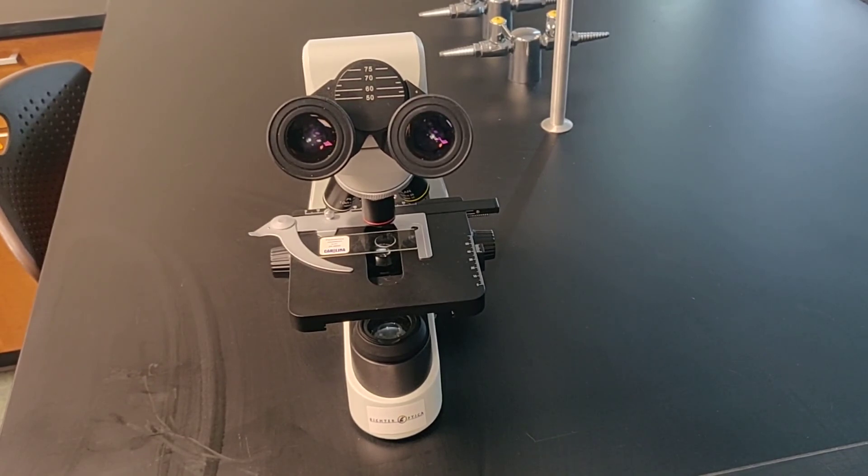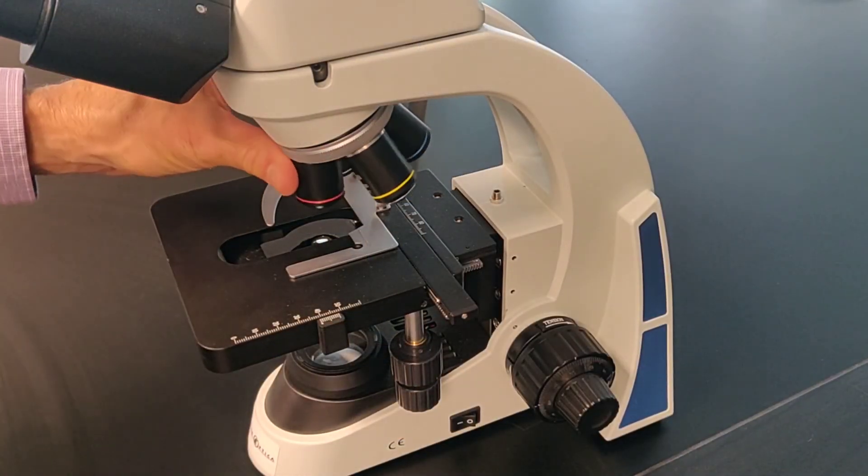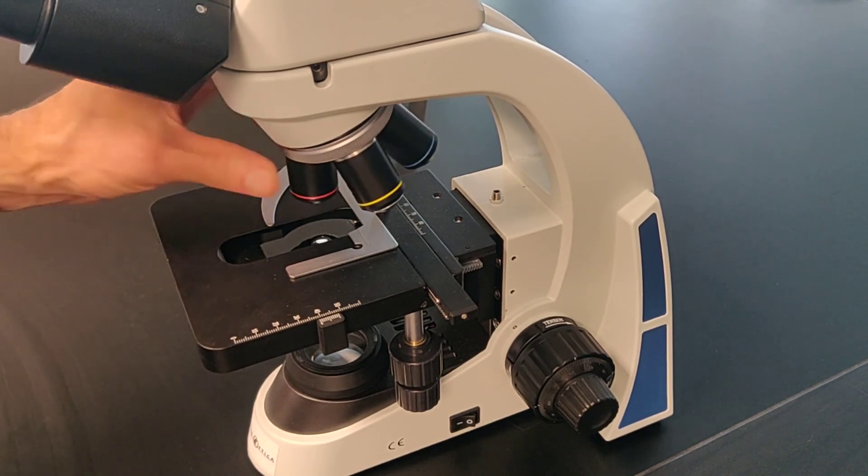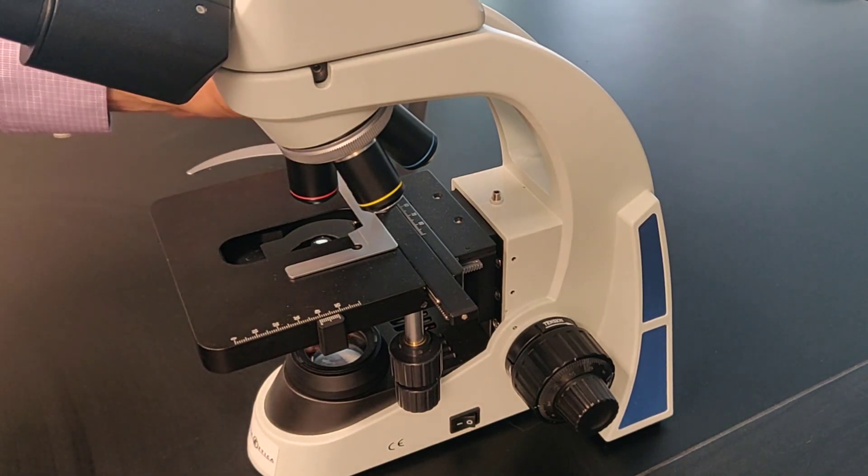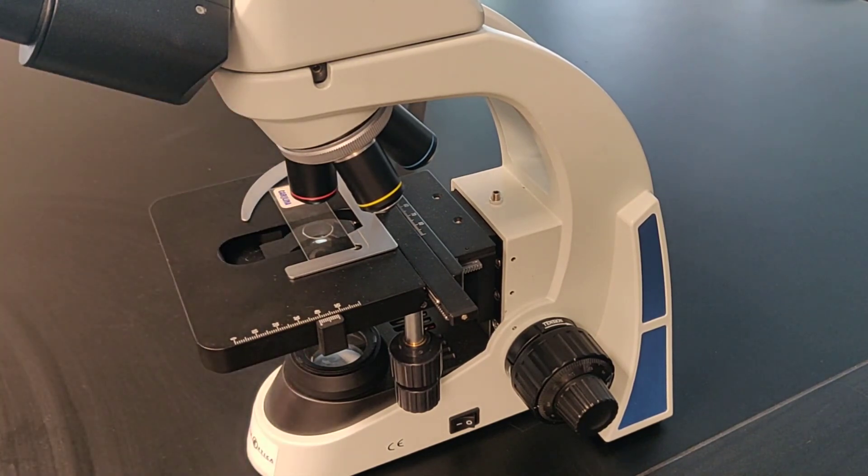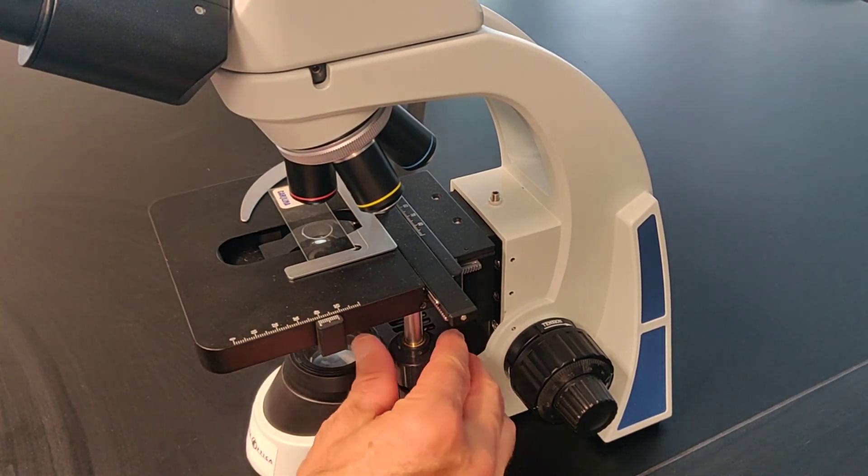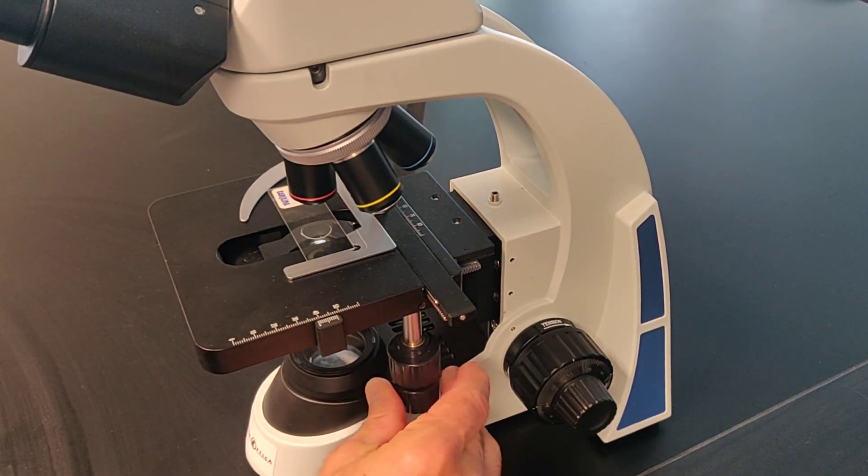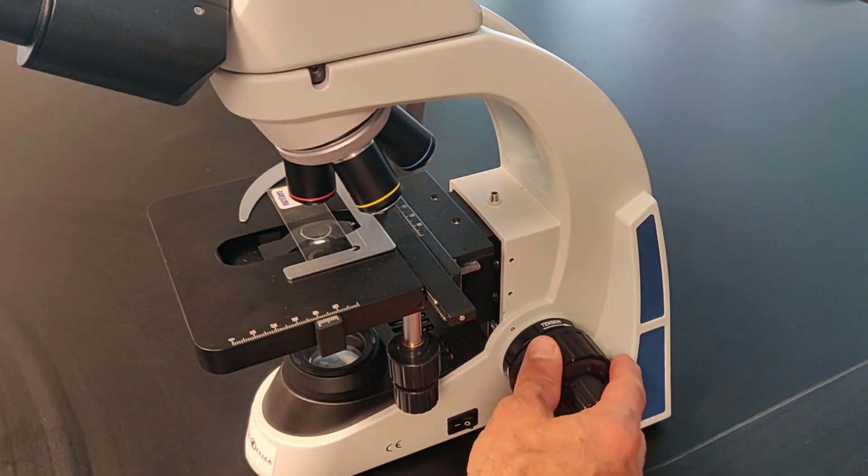Once you have the device fine-tuned to your needs, examining other slides is simply a matter of returning the nose piece back to the scanning objective lens, releasing the spring-loaded slide clip, and placing a new specimen onto the stage. You may need to re-center the specimen using the stage controller knobs, but everything else about making your observation should be very quick at this point. Start with the scanning lens to locate your new specimen, and then advance to the next highest power lens to resolve as much detail as you need.